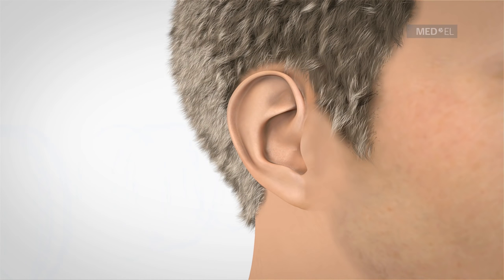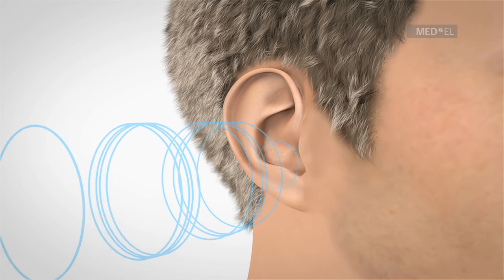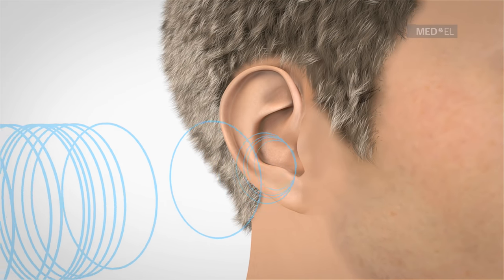Ears are constantly active. They pick up sound waves and change them into information that the brain can interpret, such as music or speech.